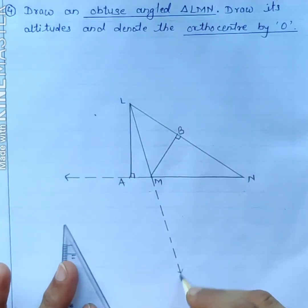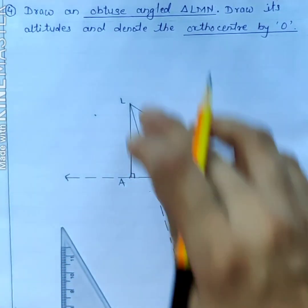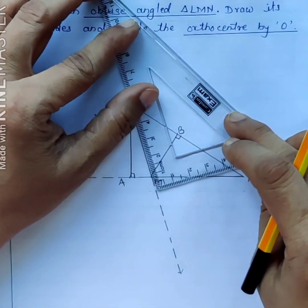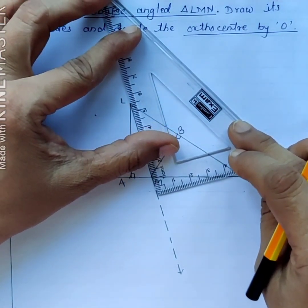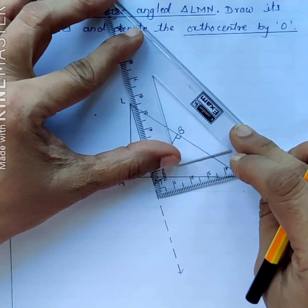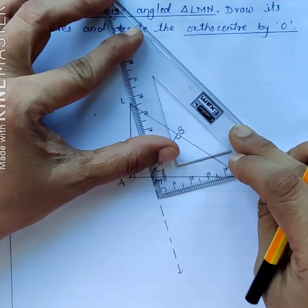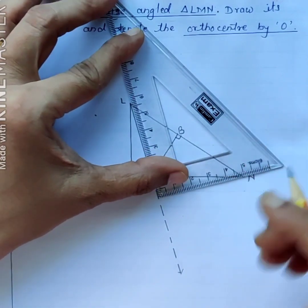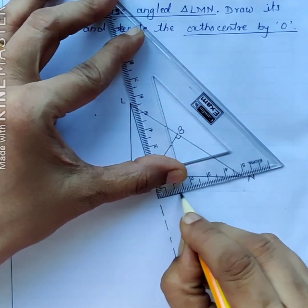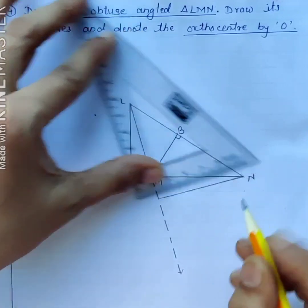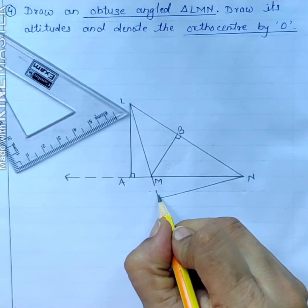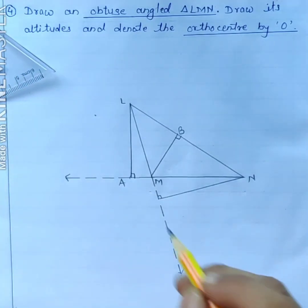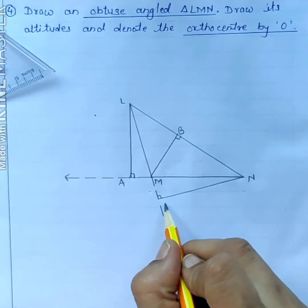And now we can draw perpendicular on this extended side. Use set square like this. Move it up to the vertex and draw perpendicular like this. So this is perpendicular to the side LM. And name it as NC.